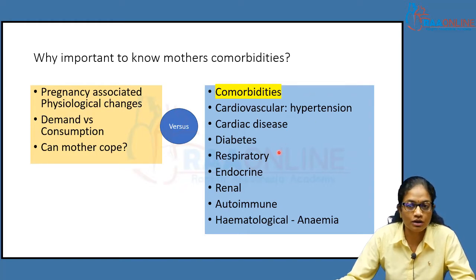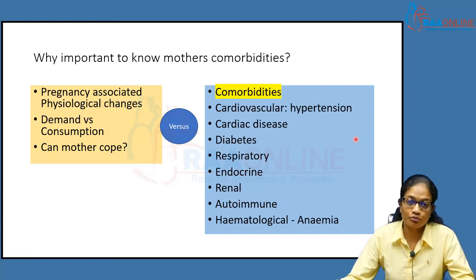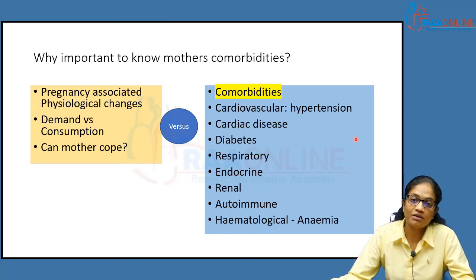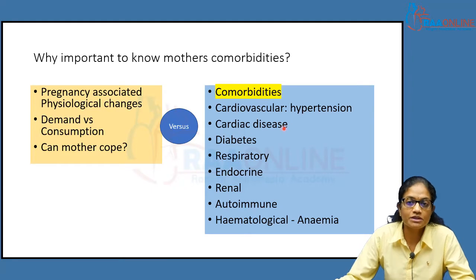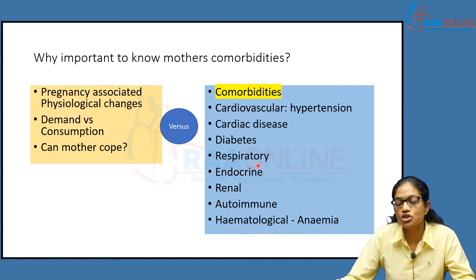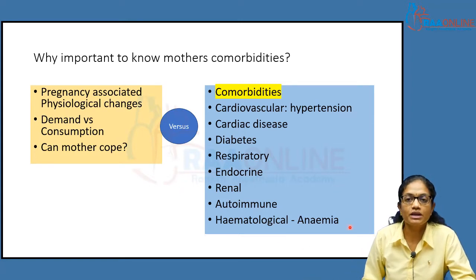Next come cardiac disease and diabetes — these are the three main culprits. Most of them are associated with acquired diseases rather than inherited problems, because congenital problems are usually dealt with and their risk potential is well understood. However, lifestyle-associated problems are the ones being ignored, leading women to end up with multiple issues. Next come respiratory problems, endocrine, renal, autoimmune, and hematological issues — anemia is again a common problem that we should diagnose, optimize, and manage.